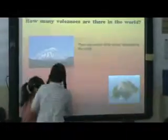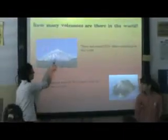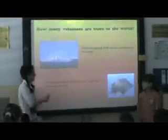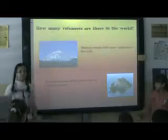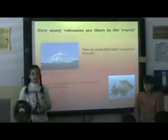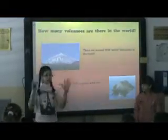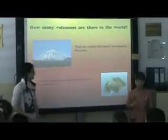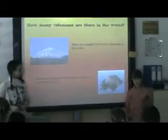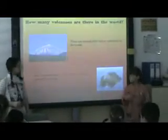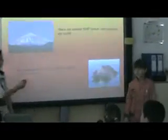How many volcanoes are there in the world? There are around 1,510 active volcanoes in the world. We barely know 80 or more which are under the ocean.